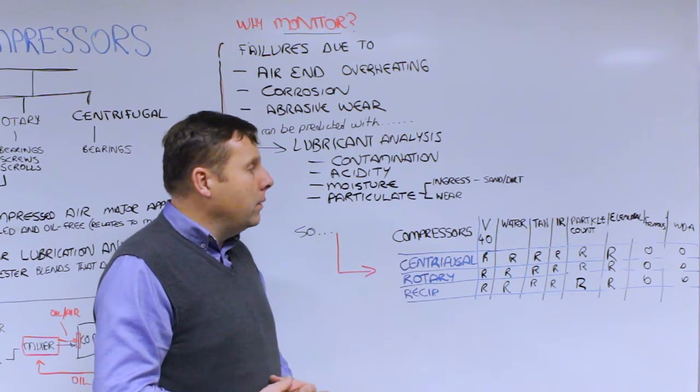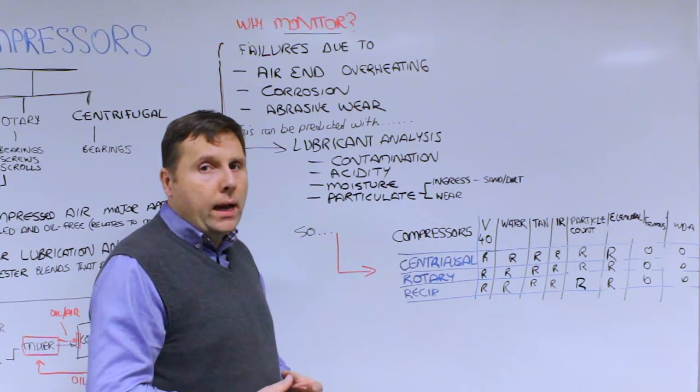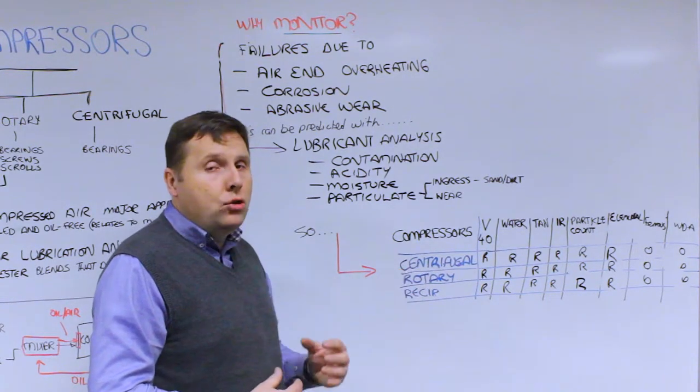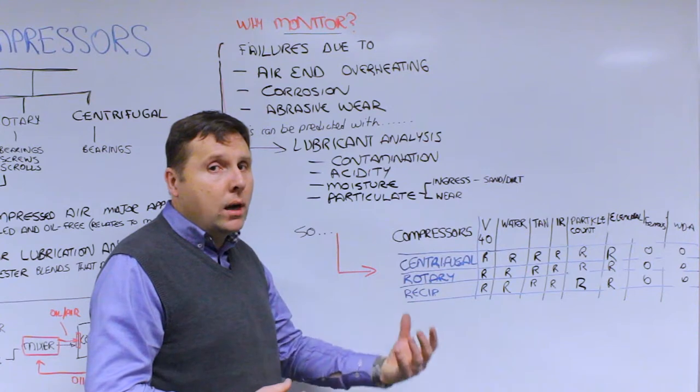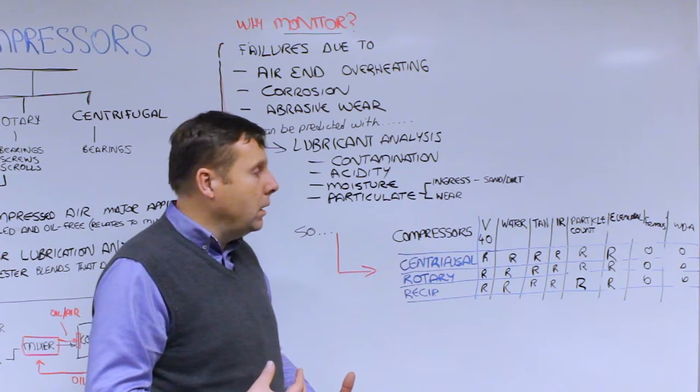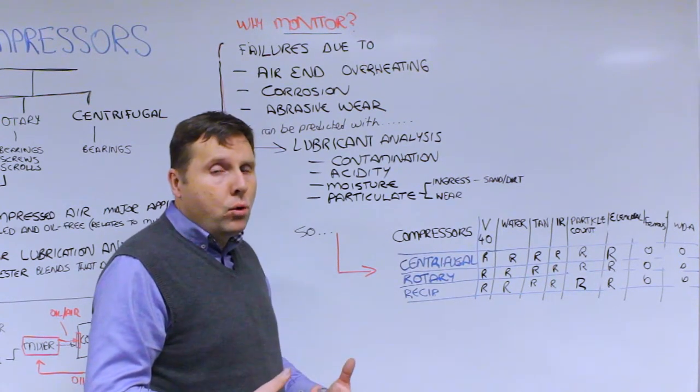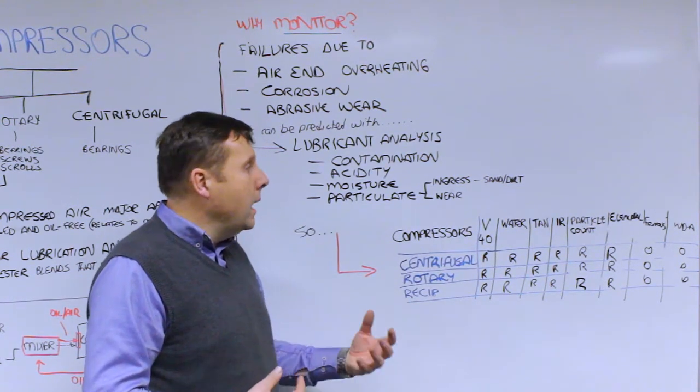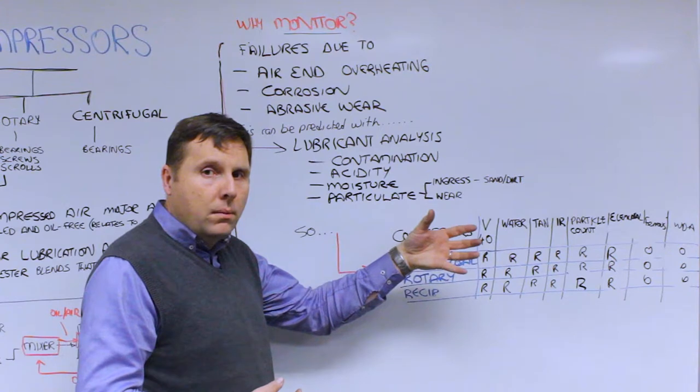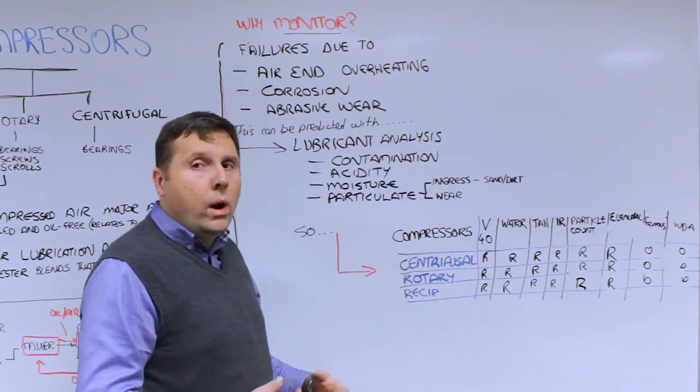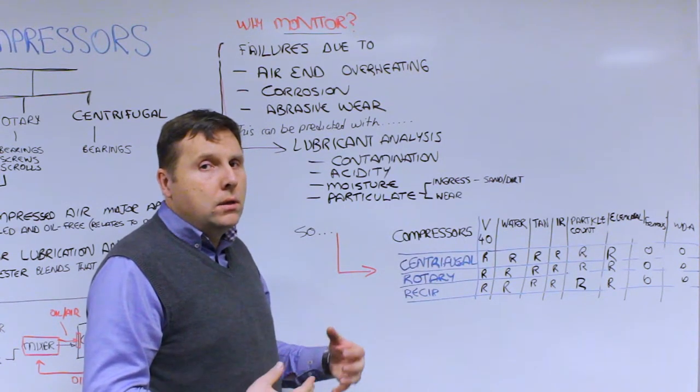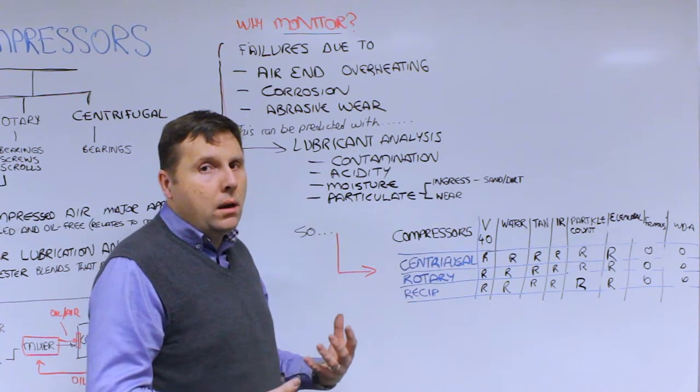We also worry about total acid number and measure all the acidity present in the oil. We also recommend you run infrared oxidation because that tells you if it's oxidation related or if there are other products in there that could be causing the acid number to increase. Particle count is very important because it measures the particulate. It's particularly helpful because you can also distinguish between ingress, sand and dirt from the outside if a filter is broken or clogged versus wear coming from the bearings and from the scrolls. And elemental analysis is very helpful to be able to look at both the ferrous and the non-ferrous material.